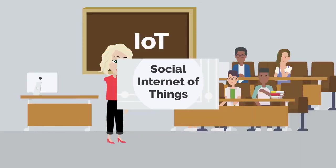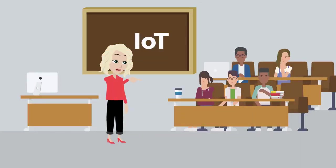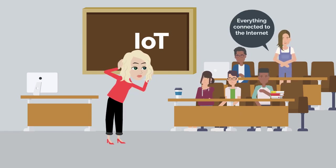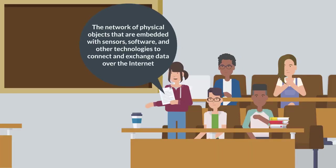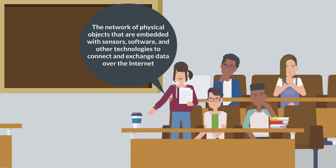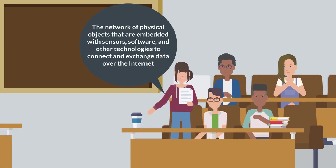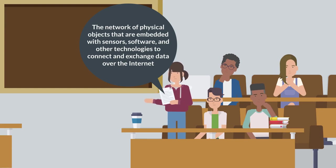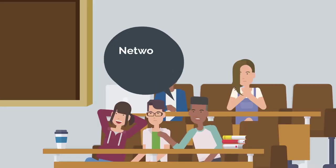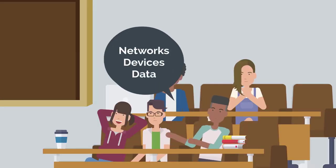But first, let's start with the definition of the Internet of Things. In the broadest sense, the term IoT encompasses everything connected to the Internet. More precisely, it describes a network of physical objects that are embedded with sensors, software, and other technologies for the purpose of connecting and exchanging data with other devices and systems over the Internet. It's about networks, it's about devices, and it's about data.